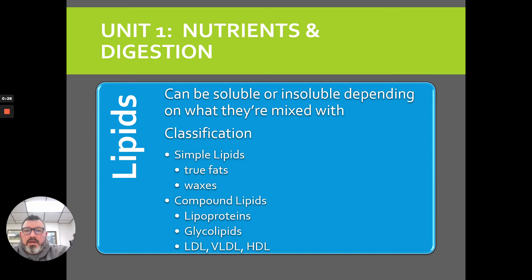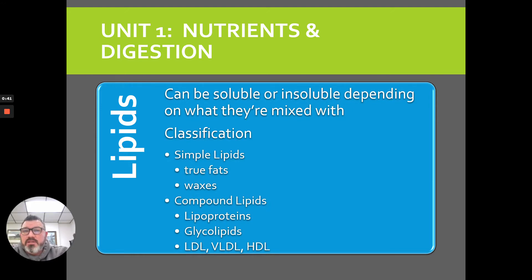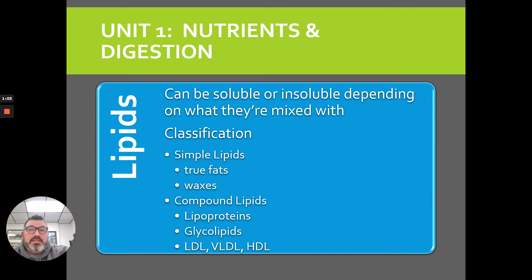Let's first talk about lipids. Lipids are soluble or insoluble dependent upon what we're mixing them with. There's a variety of different fat sources that we will utilize at different points in time. Just like we introduced in the carbohydrates section, we'll start to classify some things. Simple lipids are just true fats or waxes that you may use in the ration. Compound lipids are a lipid tied to something else — for example, a lipoprotein is a lipid attached to a protein, or a glycolipid is a fat molecule attached to a sugar molecule.